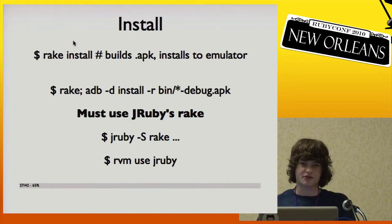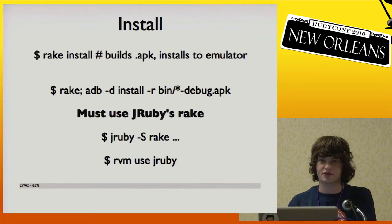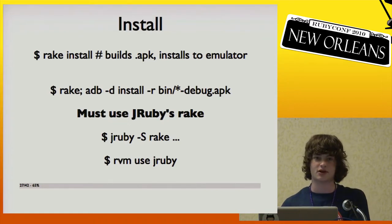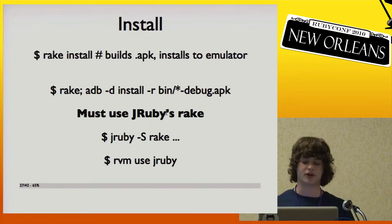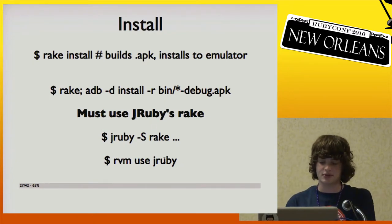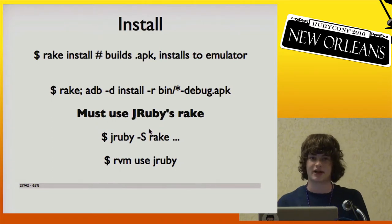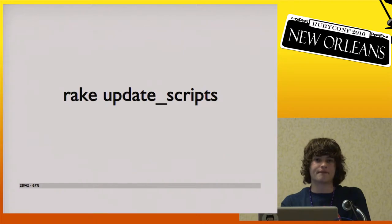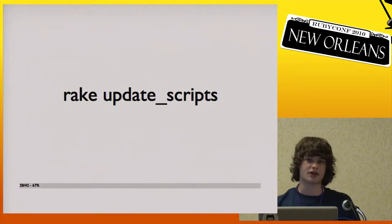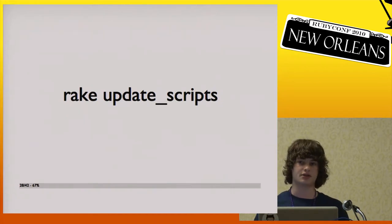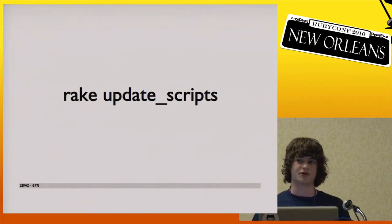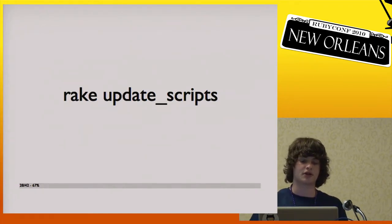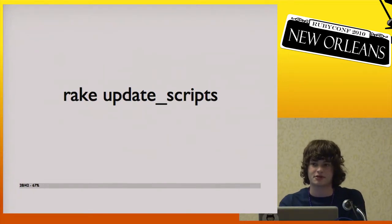There are various ways to install. The main thing is to make sure you're using JRuby's rake because it needs that to talk to Ant, which is the Java build tool that Android uses. The easiest way is to run `rvm use jruby` and then everything after that uses JRuby's rake, or you can run `jruby -S rake` for every rake call. One cool thing is rake update_scripts — whereas in a Java app you have to recompile everything on each change, if you just change Ruby code you can copy the scripts over directly if you have root access to the device, then restart and see your changes, which helps you develop faster than Java.